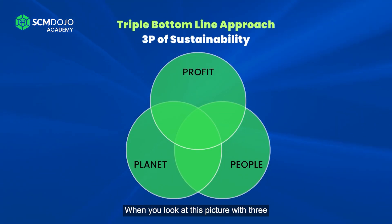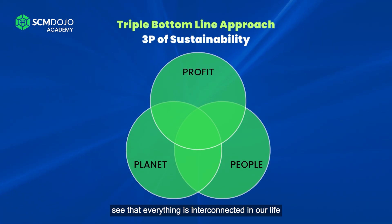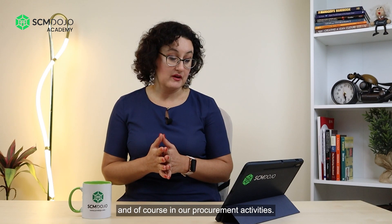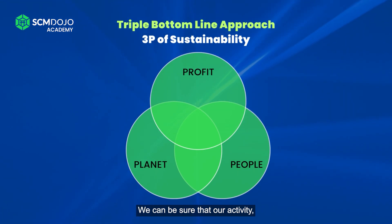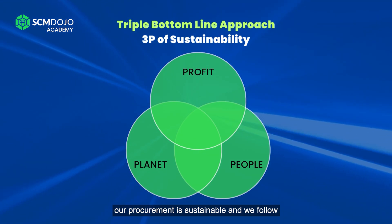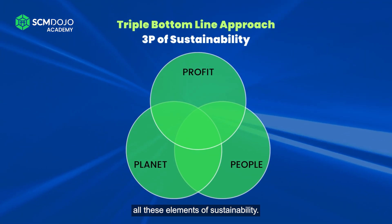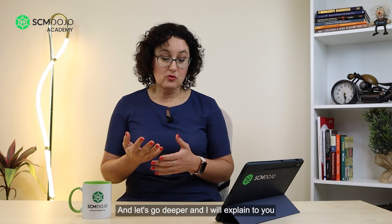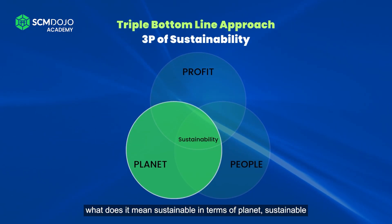When you look at this picture with three circles which are connected to each other, you will see that everything is interconnected — in our life and of course in our procurement activities. Where all three circles overlap and cover each other, we can be sure that our procurement activity is sustainable and follows all these elements of sustainability. Let's go deeper into each one.